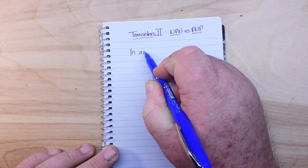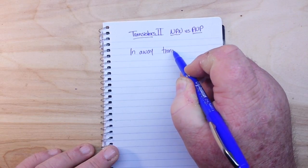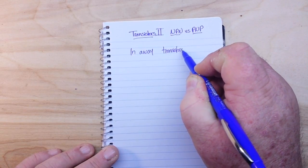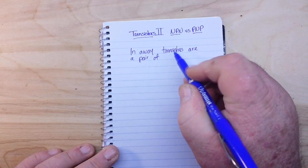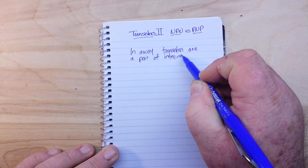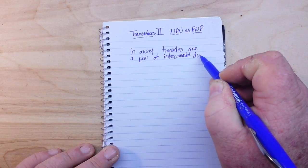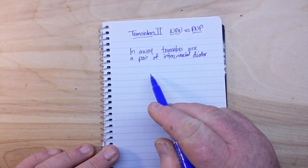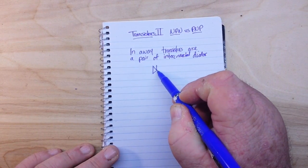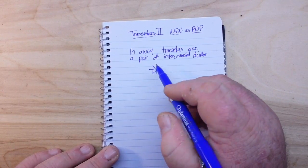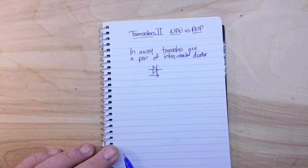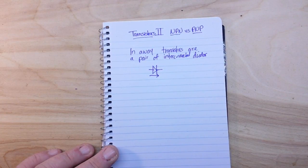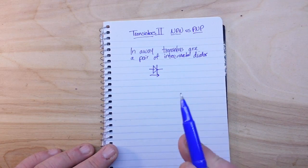And what the diodes do is control the flow of current. So that's what our transistors can do - they can control the flow of current acting as a switch, and they also act as an amplifier. We didn't talk about this in our previous lesson, but we'll talk about it today.